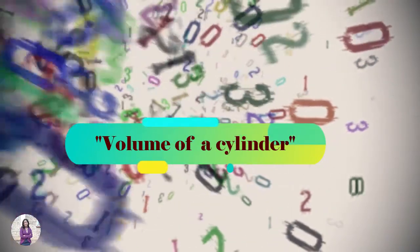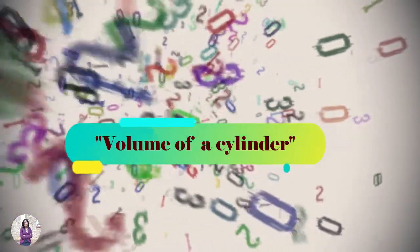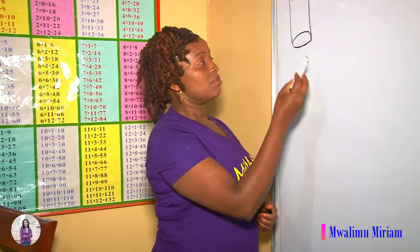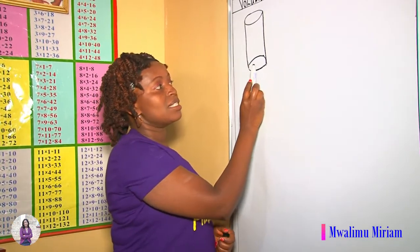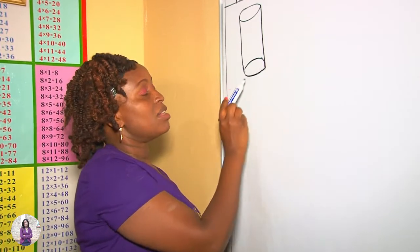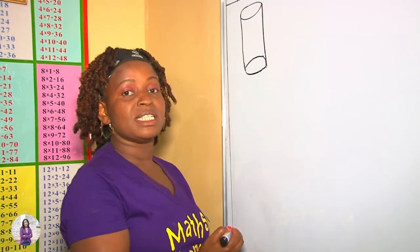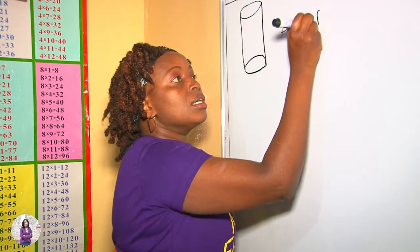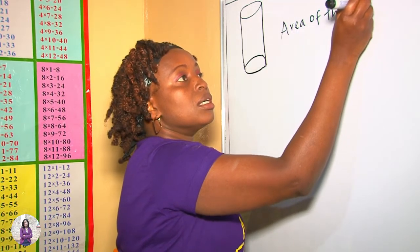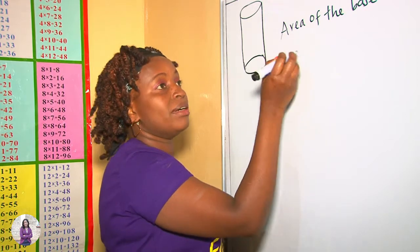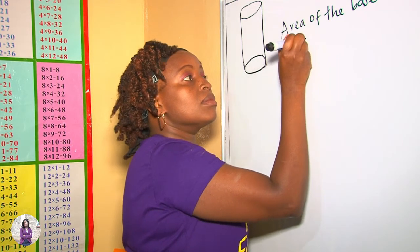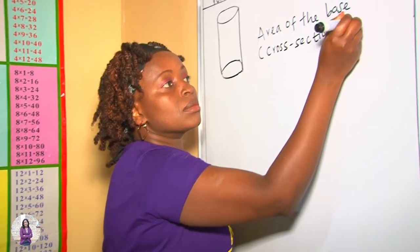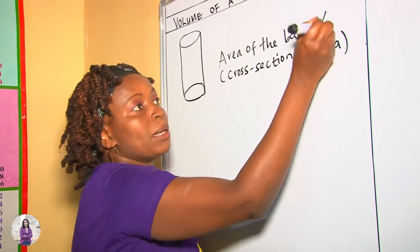To begin with, we need to derive the formula for getting volume of a cylinder. A cylinder, at the base here, it has a circle. Therefore, if you want to get the volume of the cylinder, we say area of the base, which is a so-called cross-sectional area, multiplied by the height.